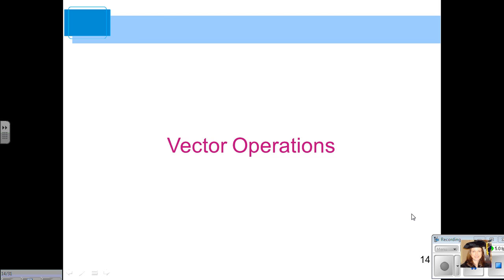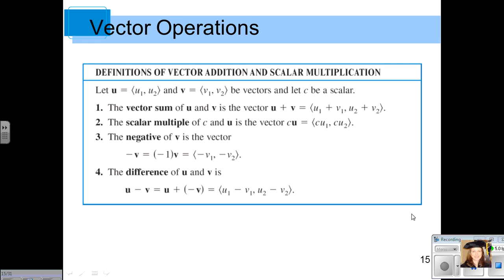On to vector operations. Here are some definitions for vector addition and scalar multiplication. Suppose we have two vectors, U and V. We can find the vector sum. That's simply adding the vectors together where you add the corresponding components. You can find the scalar multiple of the vector by multiplying the components by that scalar. You can find the negative of the vector by simply taking the opposite of each of the components. And you can also find the difference of two vectors.